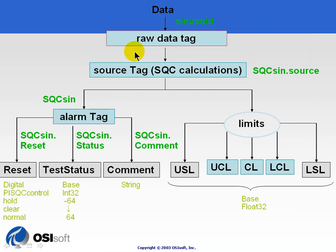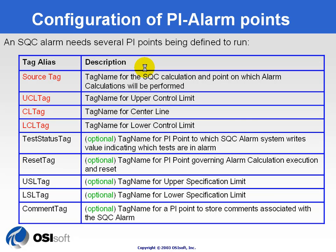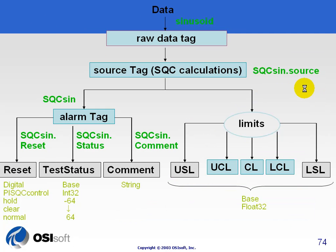We are also going to be automatically creating a series of at least four tags. These tags are listed with their definitions, and I'm going to describe what each tag does and which ones are optional versus required. It all starts with your raw data, which comes in the form of a raw data tag. You need to specify the tag whose values you're monitoring — that's the normally distributed quality-measure tag that you're doing an alarm on.